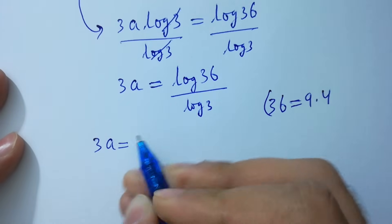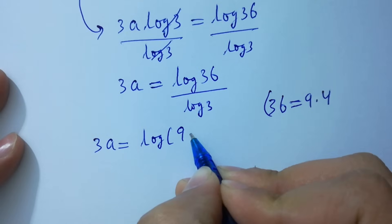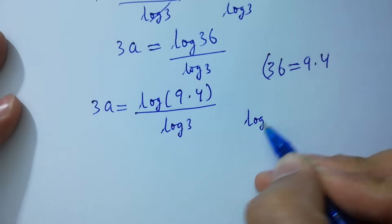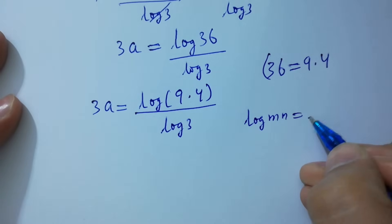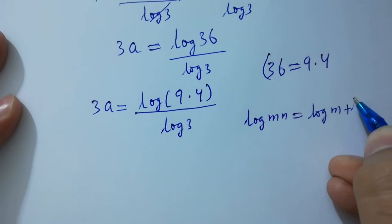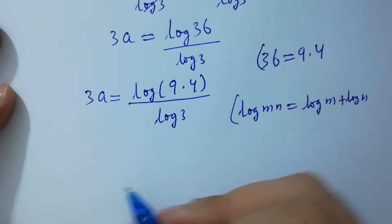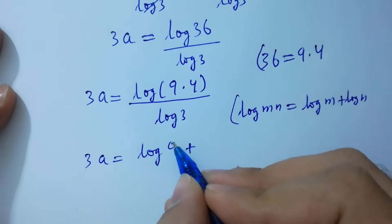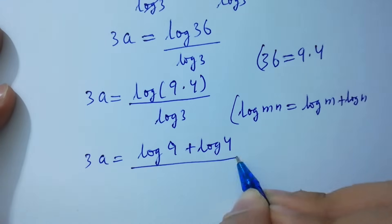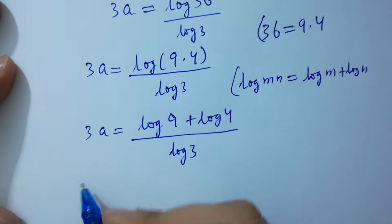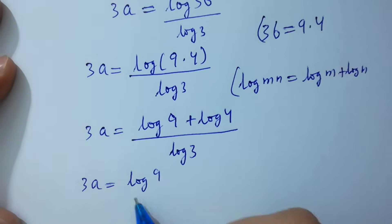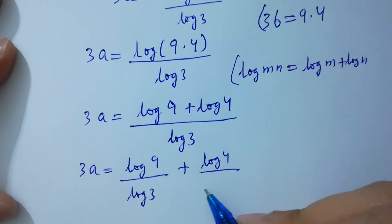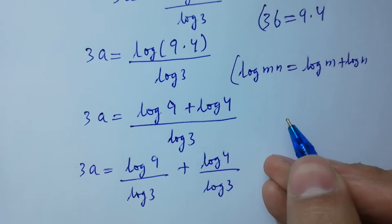Since 36 equals 9 times 4, we have 3a equal to log of 9 times 4, over log 3, which equals log 9 over log 3 plus log 4 over log 3.